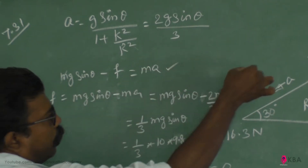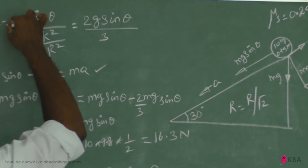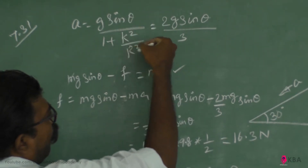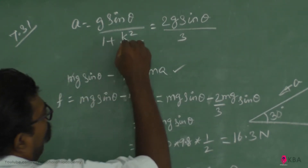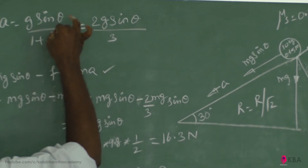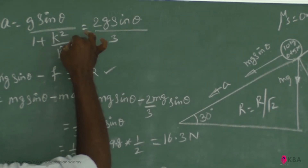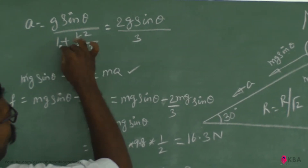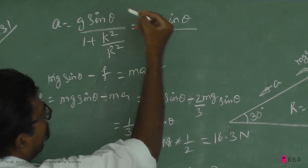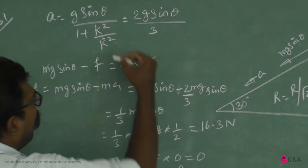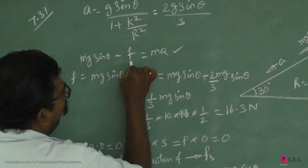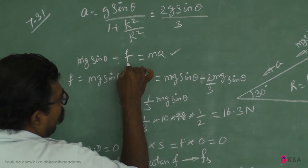As the object is rolling, the acceleration is given by the expression g sinθ divided by (1 plus k² / R²). For a cylinder, k equals R divided by root 2, so k²/R² equals 1/2. Therefore, the denominator becomes 1 plus 1/2, which is 3/2, giving acceleration a equals 2g sinθ divided by 3.